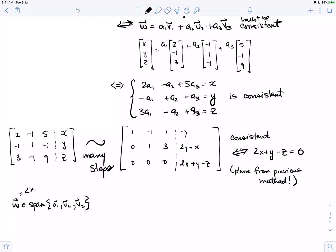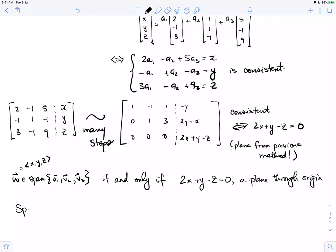So w, which is the vector x, y, z, is in the span of v1, v2, v3 if and only if the components of w satisfy 2x plus y minus z equals 0, which is a plane through the origin. Therefore, we may interpret the span of v1, v2, v3 geometrically as a plane through the origin in three-dimensional space.